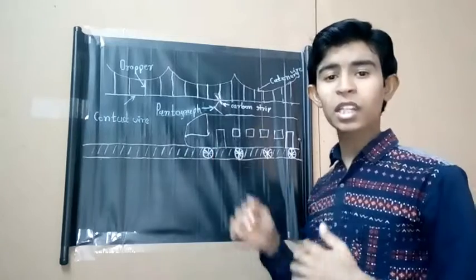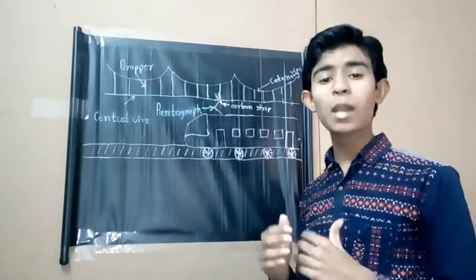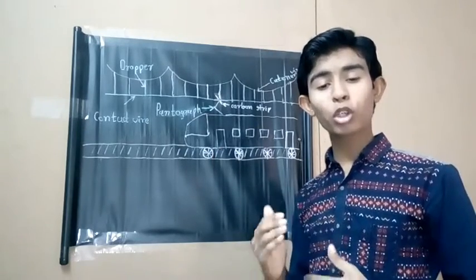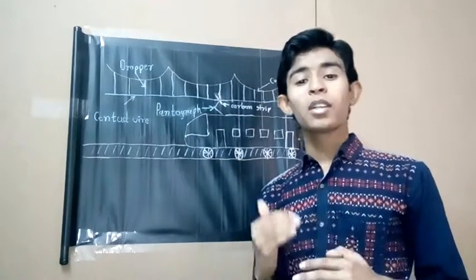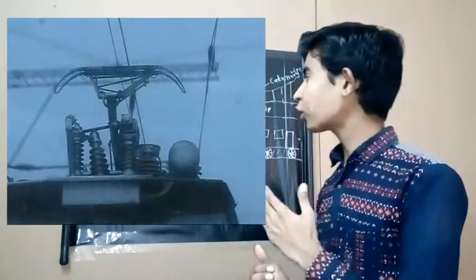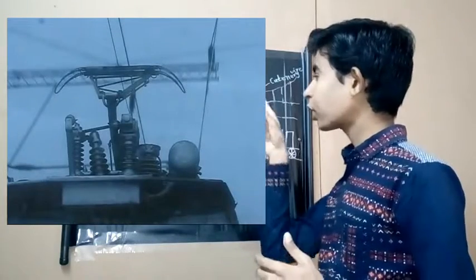When the locomotive is to be started, the pantograph is pushed up with the help of air pressure, which is delivered by a small compressor delivering air at a pressure of 7 kg per square centimeter. Now this pressure pushes the pantograph until it touches the contact wire.